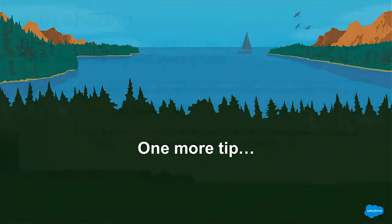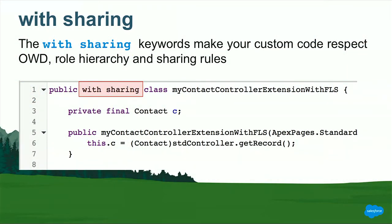There's another really important tip about your code — this is the second thing you should remember from this session. The first being that your code runs in the system context, and the second is the keyword with sharing. If you add with sharing to your code, it will make your code respect org-wide defaults, the role hierarchy, and sharing rules. If you don't have with sharing in your code, none of those things apply, because your code runs in the system context. You should go through all of your code, check to see if you have with sharing in your classes, add it, test, and roll that out — it's definitely a best practice that Salesforce strongly recommends for everything you write.